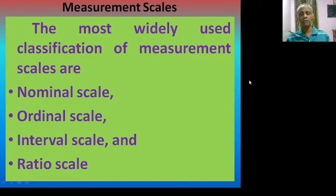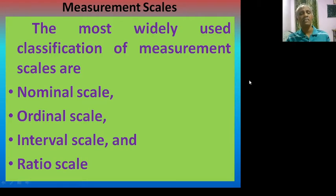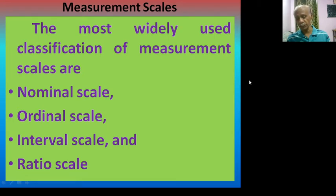Nominal data are numerically named only because they do not share any of the properties of the numbers we deal with in ordinary mathematics. There are various types of measurement scales. The most widely used classification of measurement scales are: number 1, nominal scale; number 2, ordinal scale; number 3, interval scale; and number 4, the ratio scale.